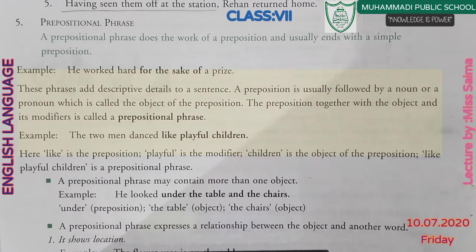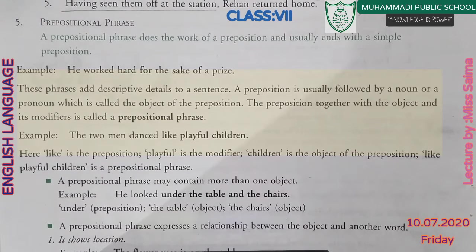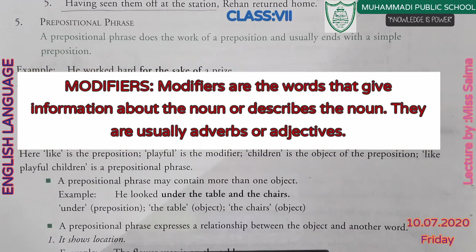A prepositional phrase adds descriptive detail to a sentence. A preposition is usually followed by a noun or a pronoun, which is called the object of the preposition. So a prepositional phrase consists of the preposition, its object, and any modifiers.